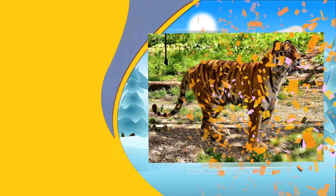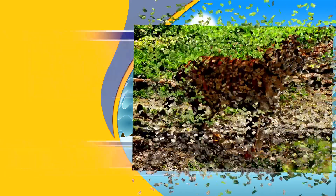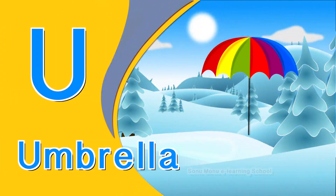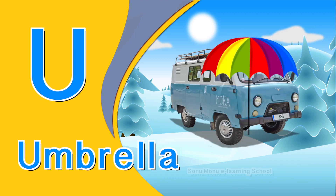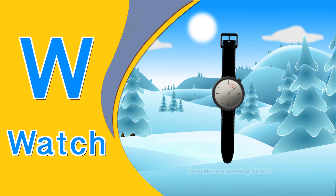T for tiger. U for umbrella. V for van. W for watch.